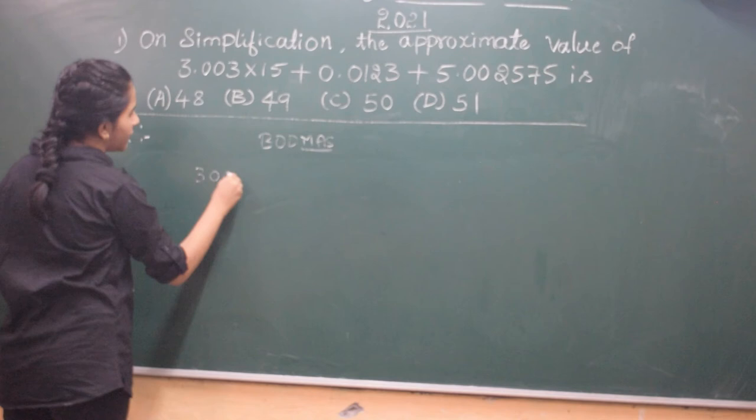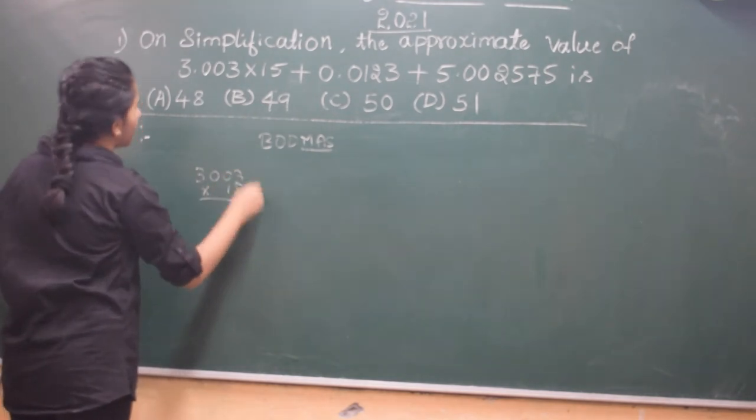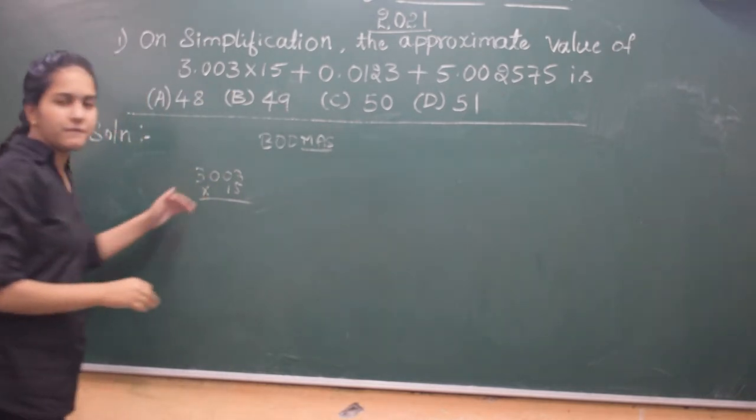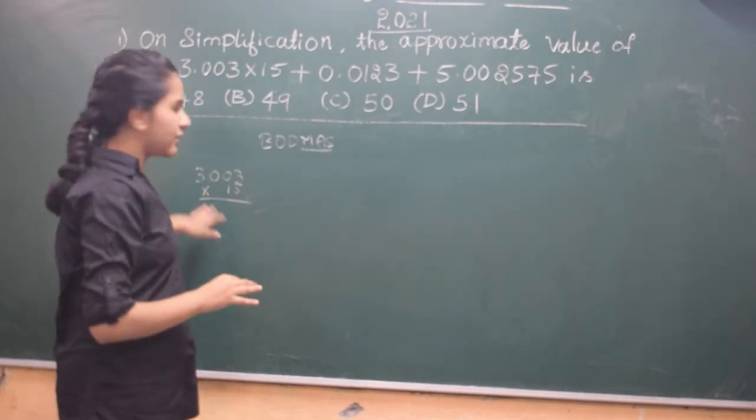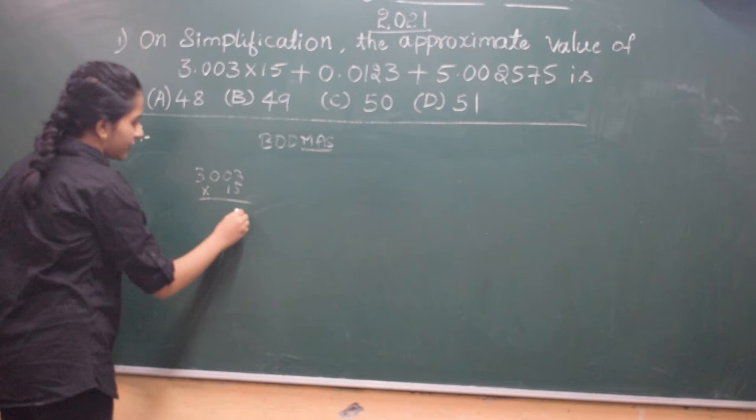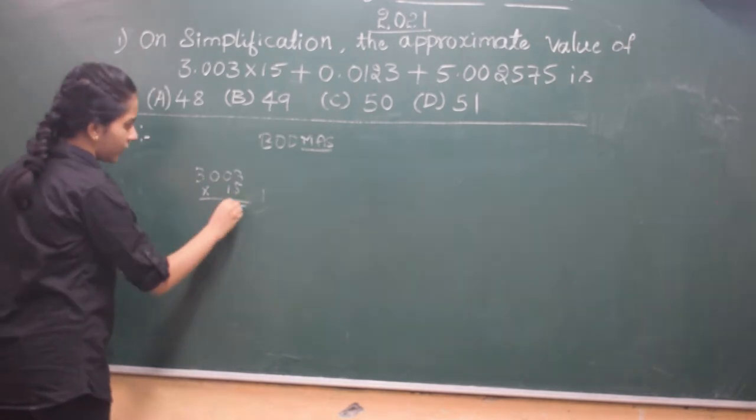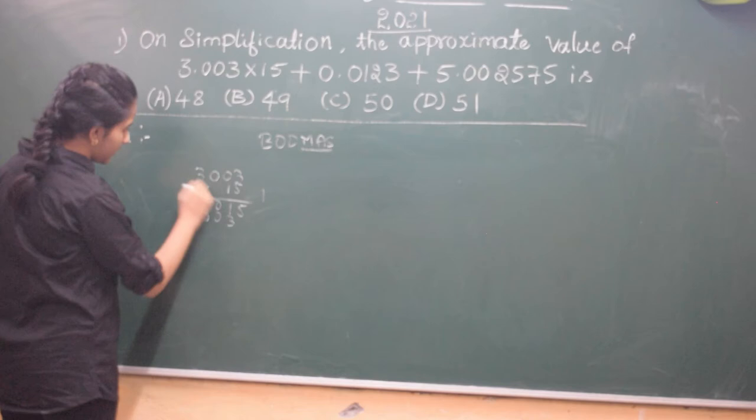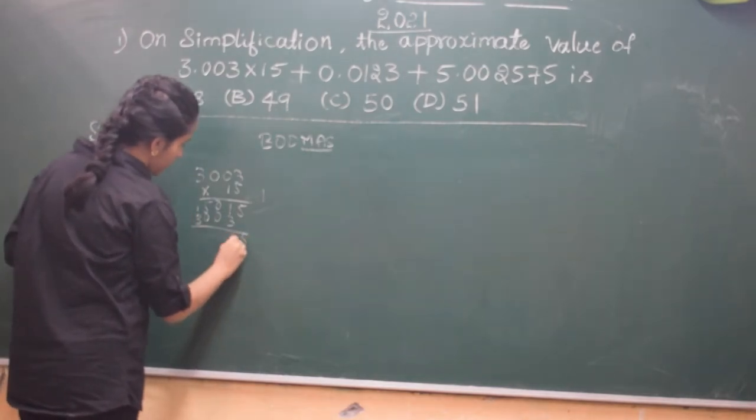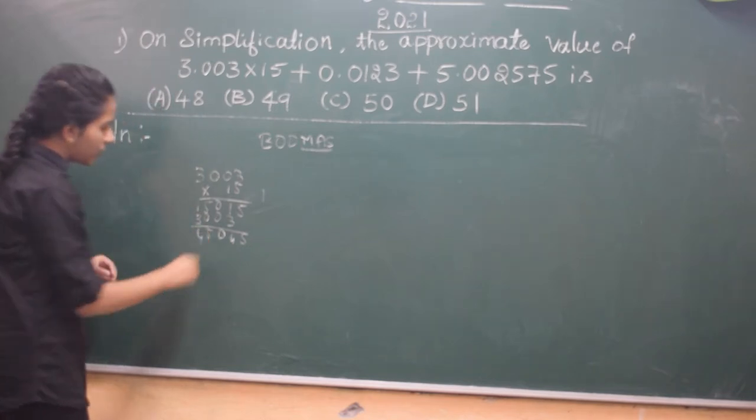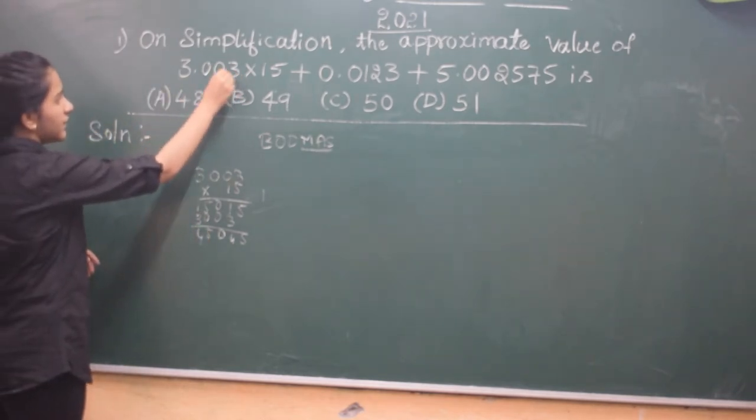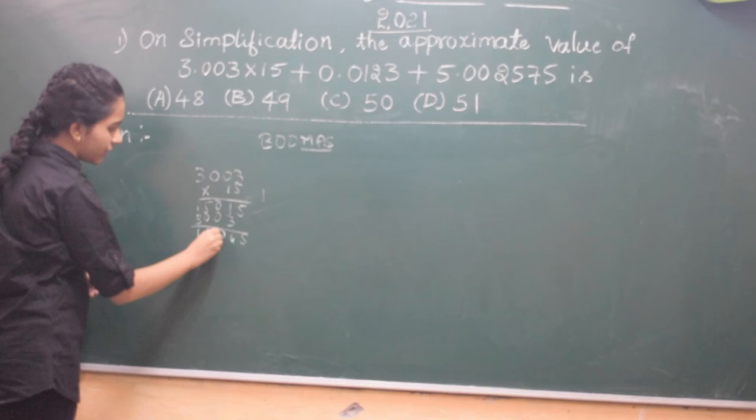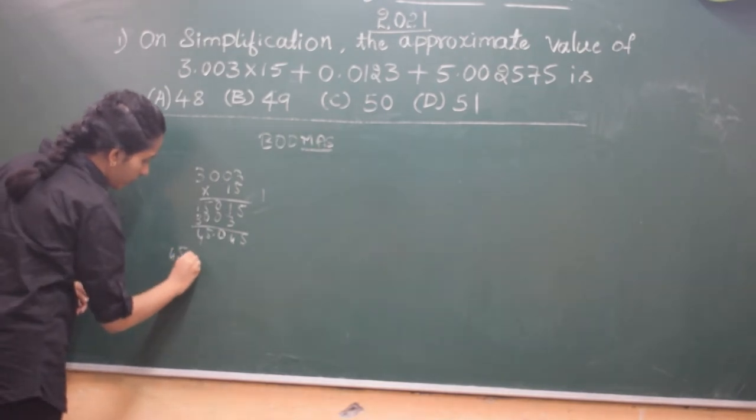3003 into 15. It is actually 3.003 but first we will take it without the point and then after multiplication we can put the point, because if we take the point then it will be confusing. So, 5×3 is 15, 5, 1 carry, 0, 5 is 0 so 1, 0, 5 is 0, 5×3 is 15, 3 ones is 3, 0 ones is 0, 0 ones is 0 and 3 ones is 3. So, 5, 4, 0, 5, 4. Now in the question, after 3 digits from right side the point is there. So here after 3 digits from right side we should put the point. So the answer will be 45.045.